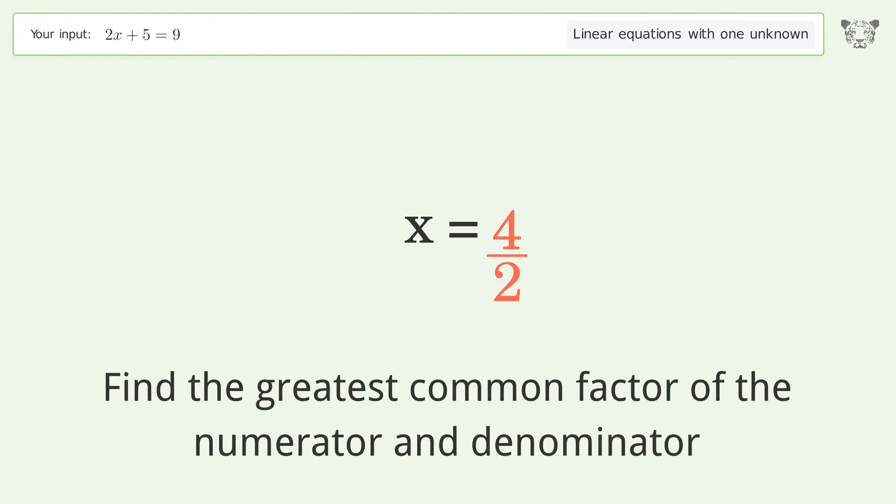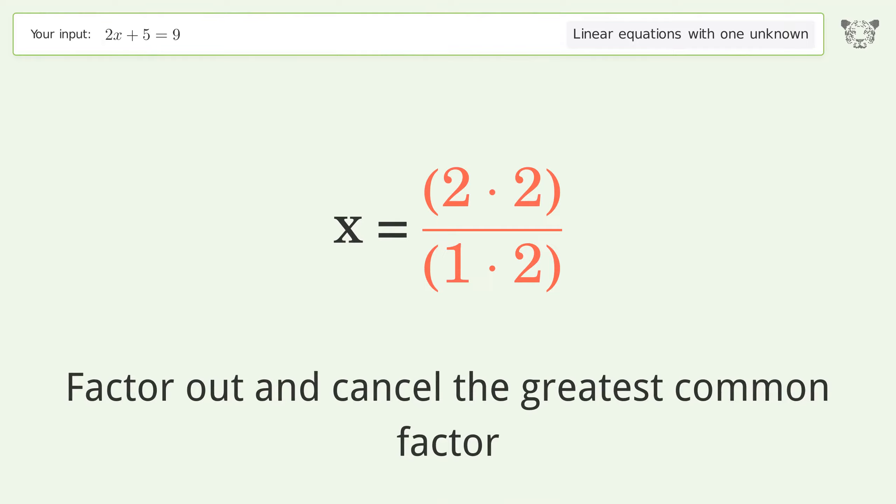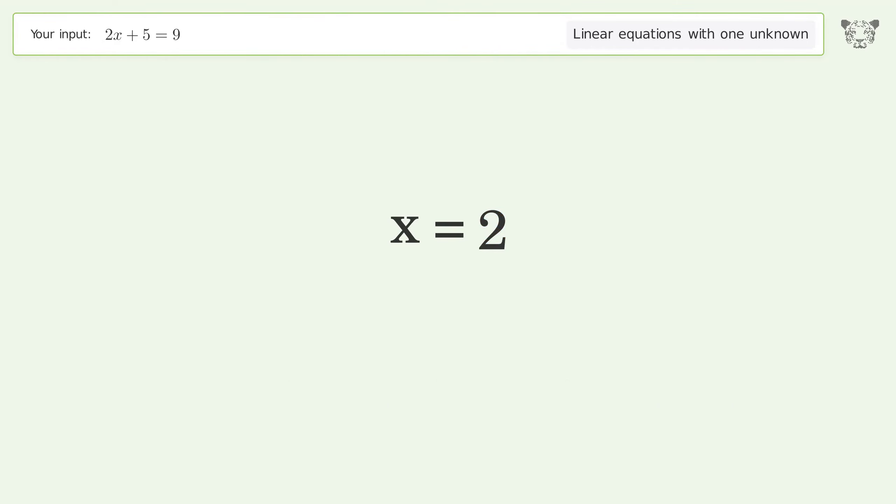Find the greatest common factor of the numerator and denominator. Factor out and cancel the greatest common factor. And so the final result is x equals 2.